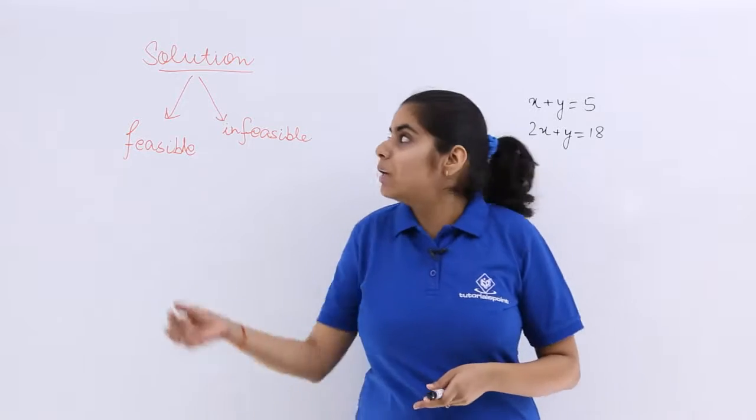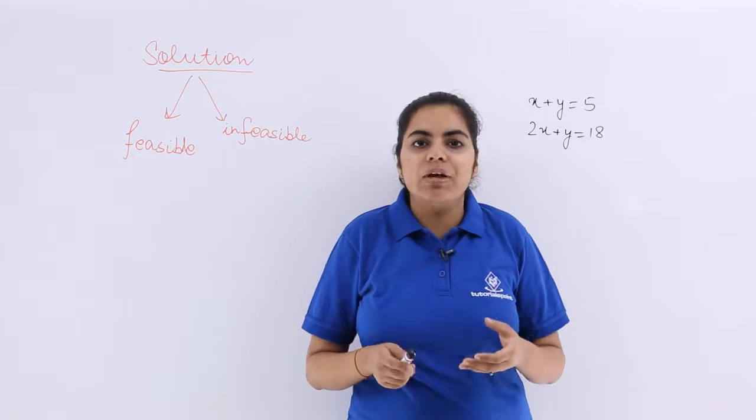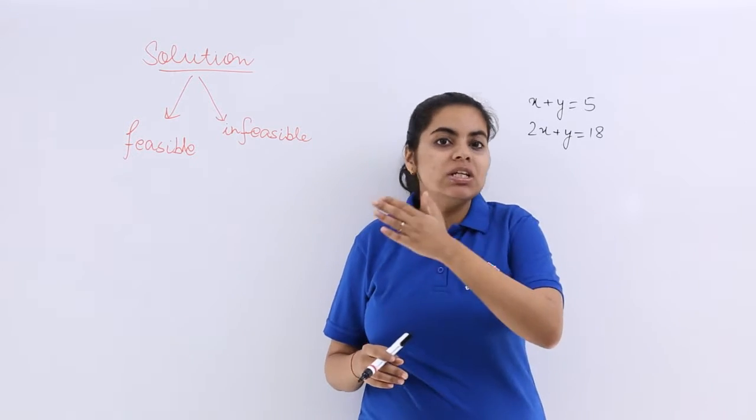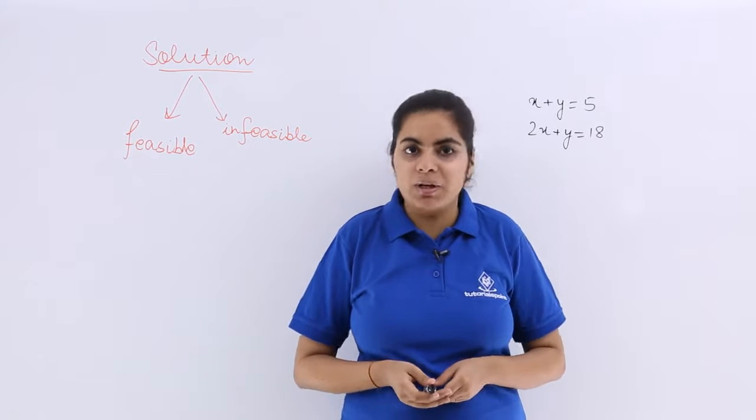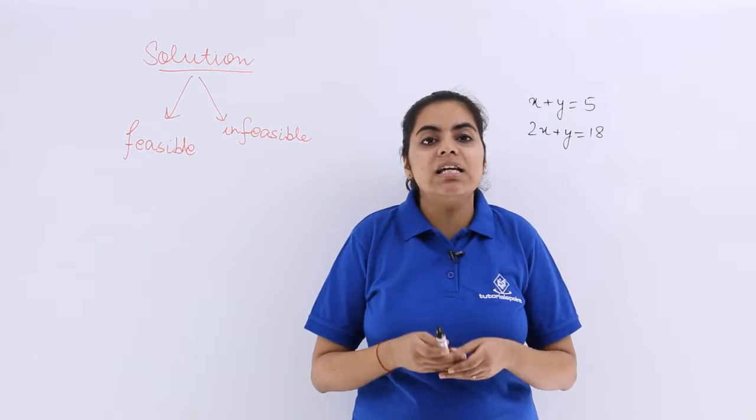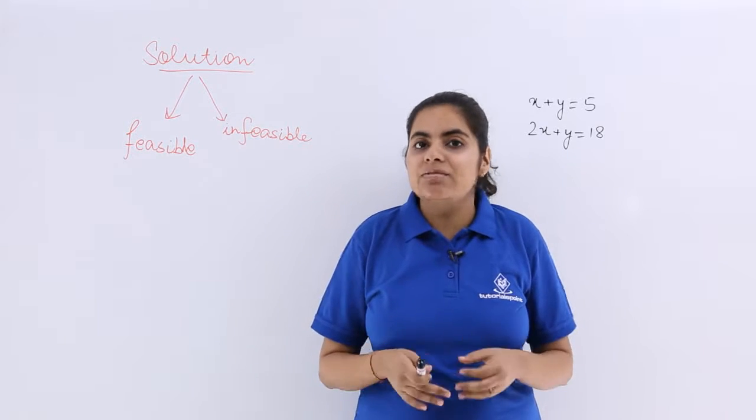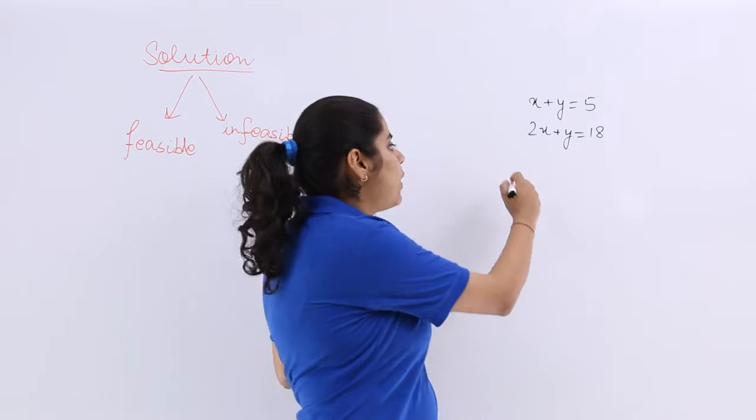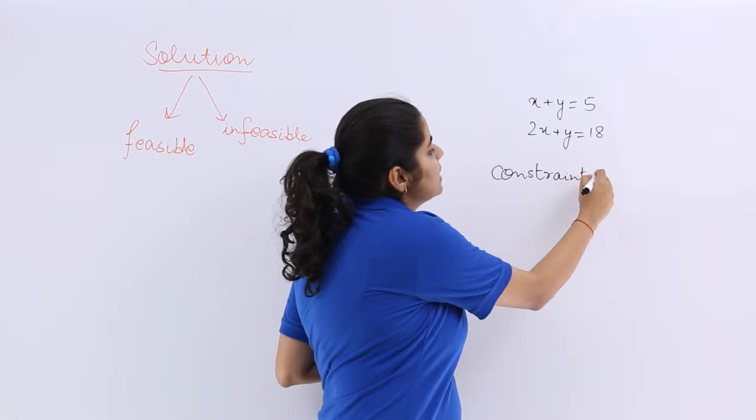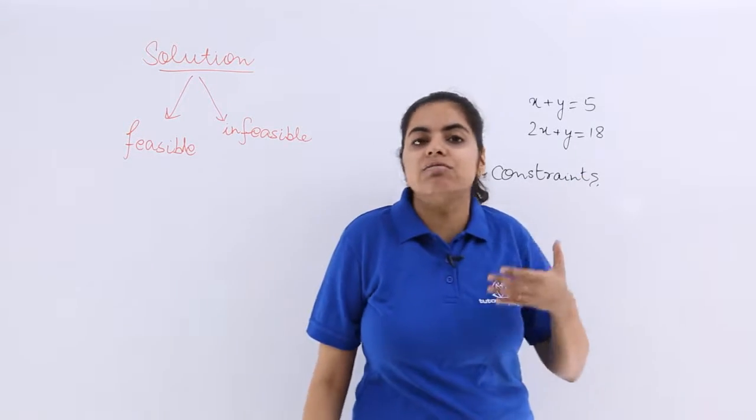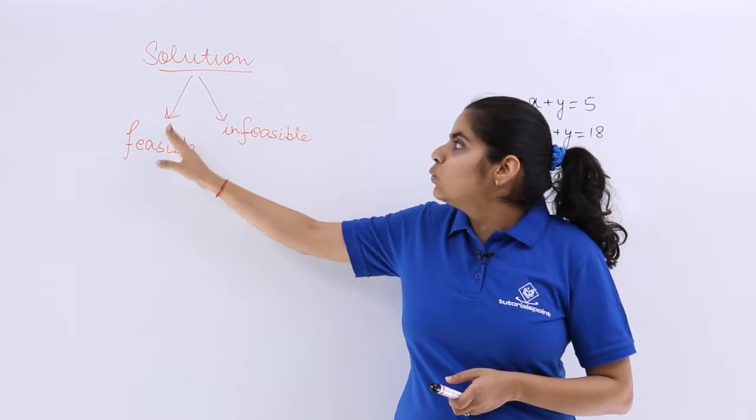But when we talk about the word solution with regard to linear programming, a set of variables x1, x2, x3 till xn would be called as the solution to a linear programming problem if it satisfies the constraints of that linear programming problem. So that is very important that whatever constraints, whatever inequality you have, those constraints should be satisfied, and then only that will give you the final answer.